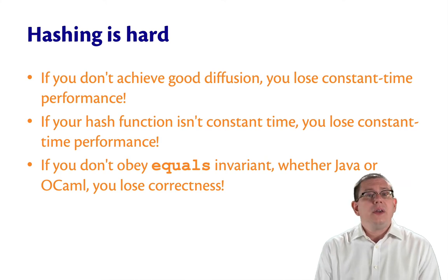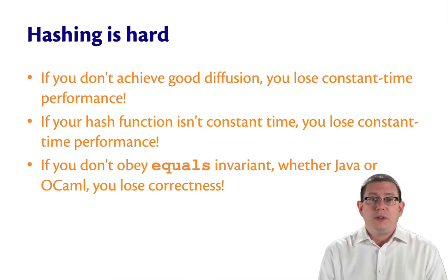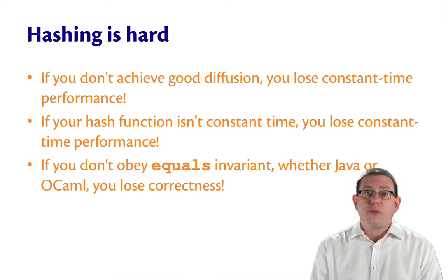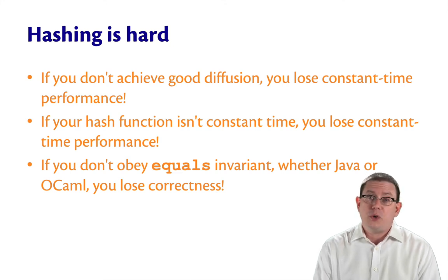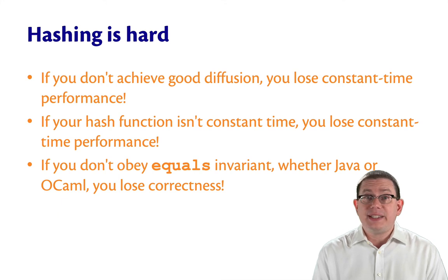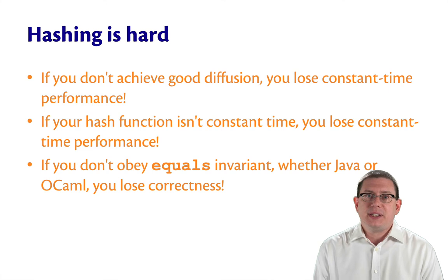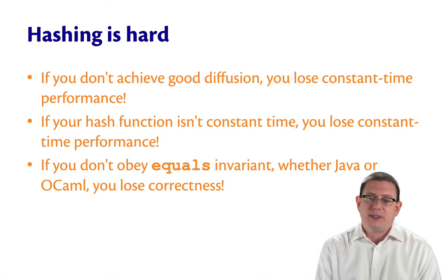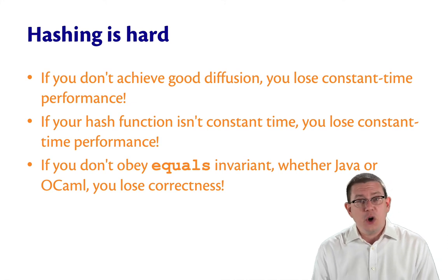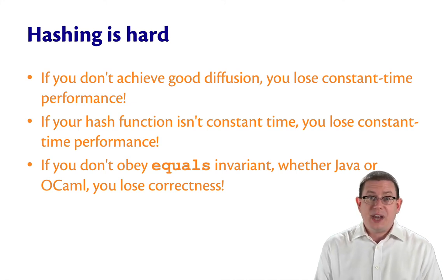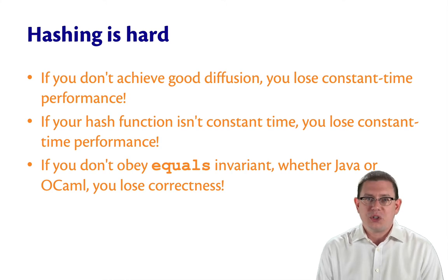Hashing is hard. If you don't achieve good diffusion, you lose constant time performance because the keys don't distribute uniformly over the buckets. If your hash function itself is not constant time, you lose constant time performance because that was an assumption needed in the analysis. And if you don't obey the equals invariant — that equals and hashCode have to agree, whether in Java or OCaml — you lose correctness.